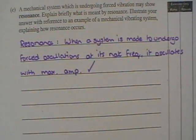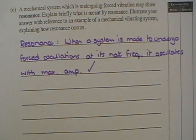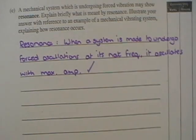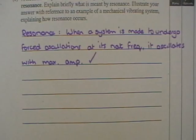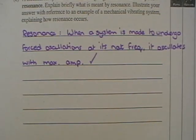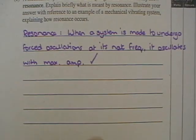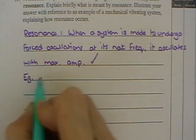It says, illustrate your answer with reference to an example of a mechanical vibrating system explaining how resonance occurs. Now you could give any example that you want: the cogs of a clock or a child in a swing, somebody pushing a child in a swing. Or I'm going to give an example of a diver on a diving board.